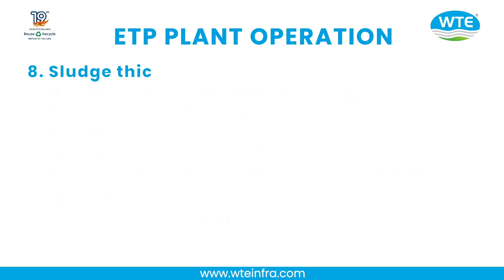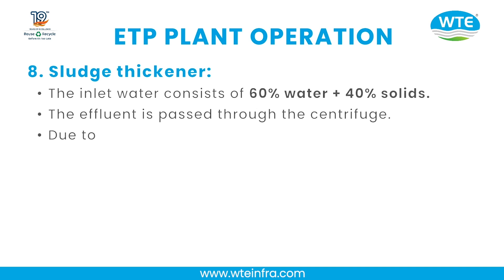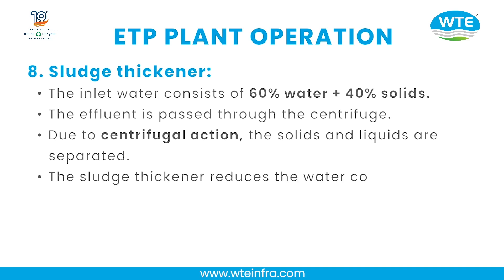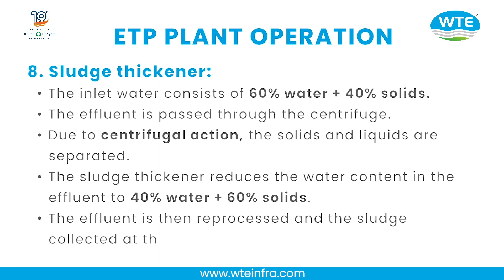Step 8 — Sludge Thickener: The inlet water consists of 60% water and 40% solids. The effluent is passed through a centrifuge; due to centrifugal action, solids and liquids are separated. The sludge thickener reduces the water content so the effluent becomes 40% water and 60% solids. The effluent is then reprocessed and the sludge is collected at the bottom.